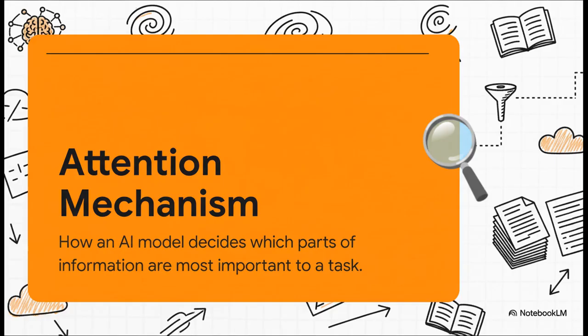To really get why this is such a big deal, you have to understand something called the attention mechanism. It's basically how an AI decides what's important. You know how you might highlight the key sentences in a textbook? The AI does something similar. It pays attention to the most relevant bits of data. This is really the core of how these models think.